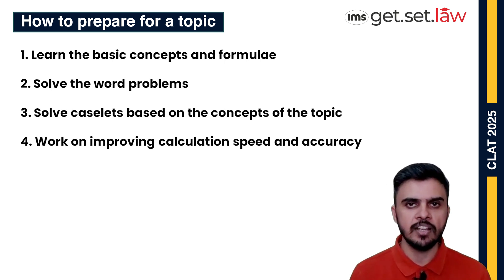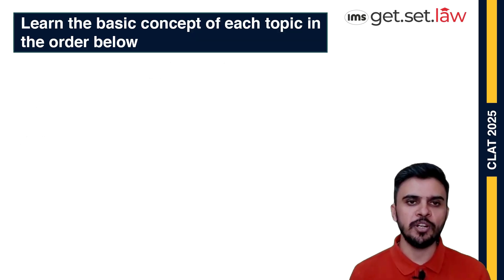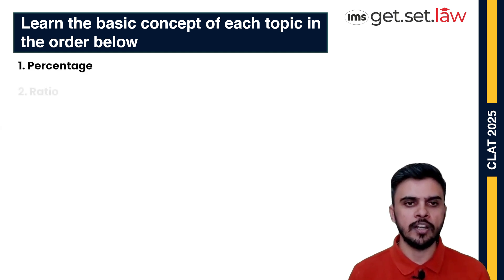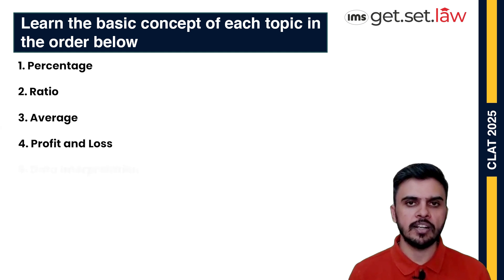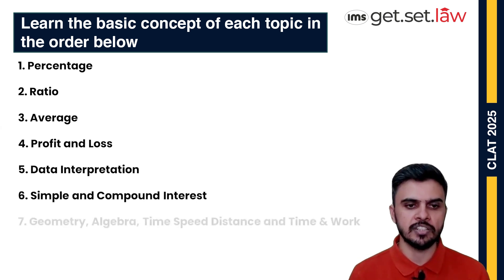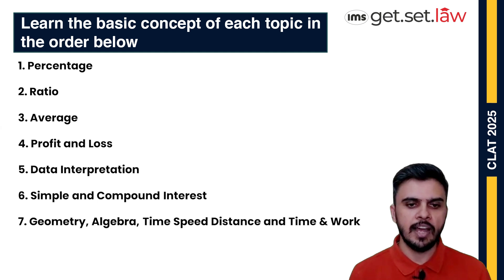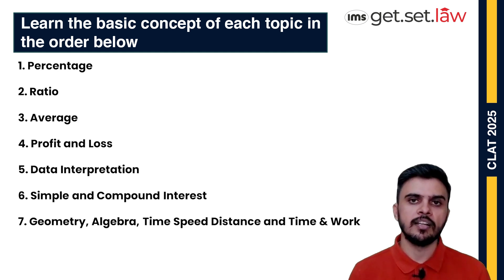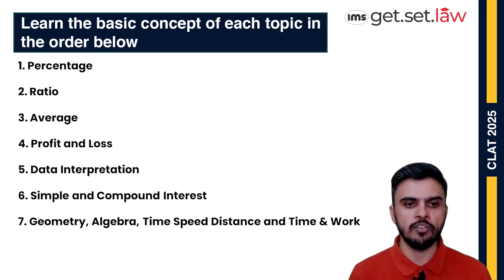The next important point is to learn the basic concepts of each topic in the order mentioned here. The order of topics starts with the important ones: percentage, ratio, average, profit and loss, and data interpretation. Lesser important topics — simple interest, compound interest, geometry, algebra, time-speed-distance, and time and work — should be prepared in later stages. Keep most of your time for the first five topics, and follow the order of preparation as mentioned.